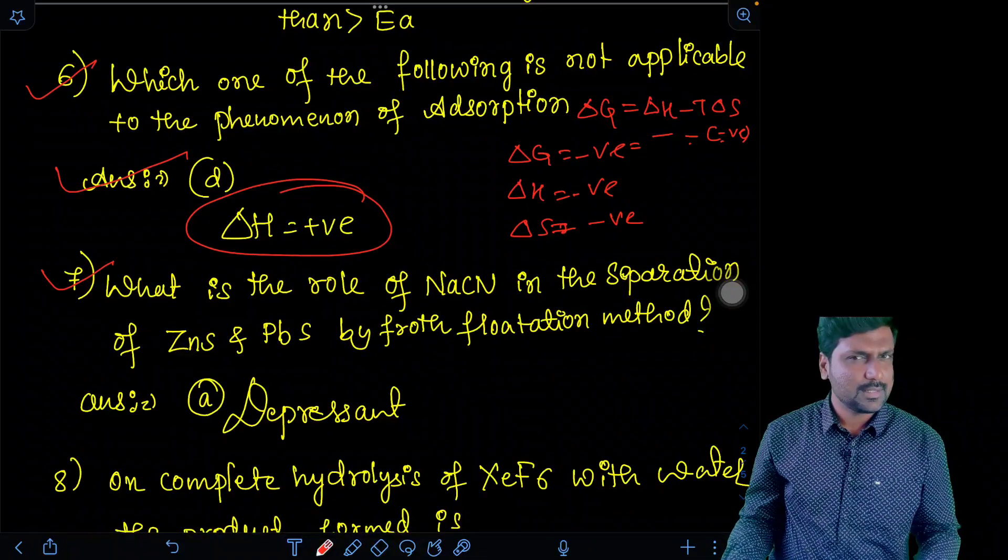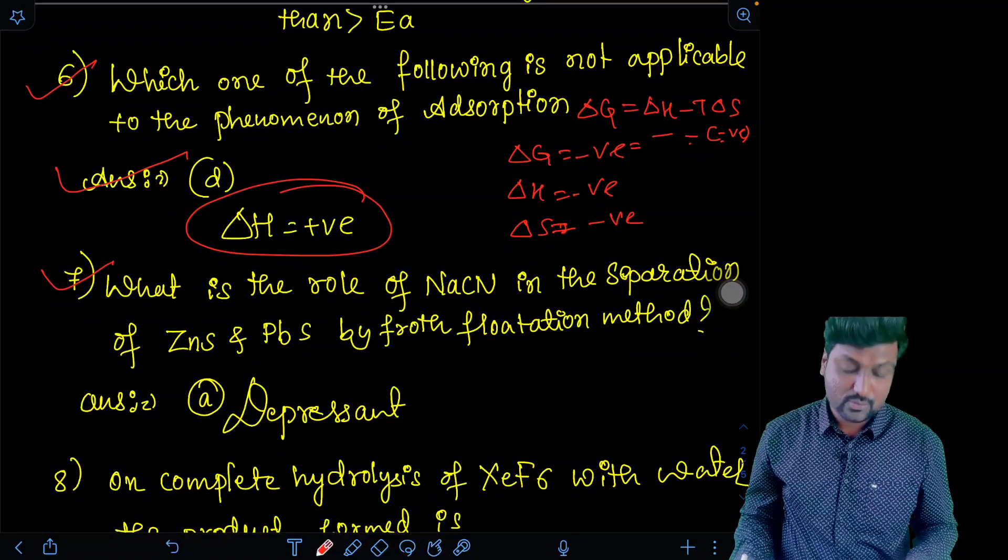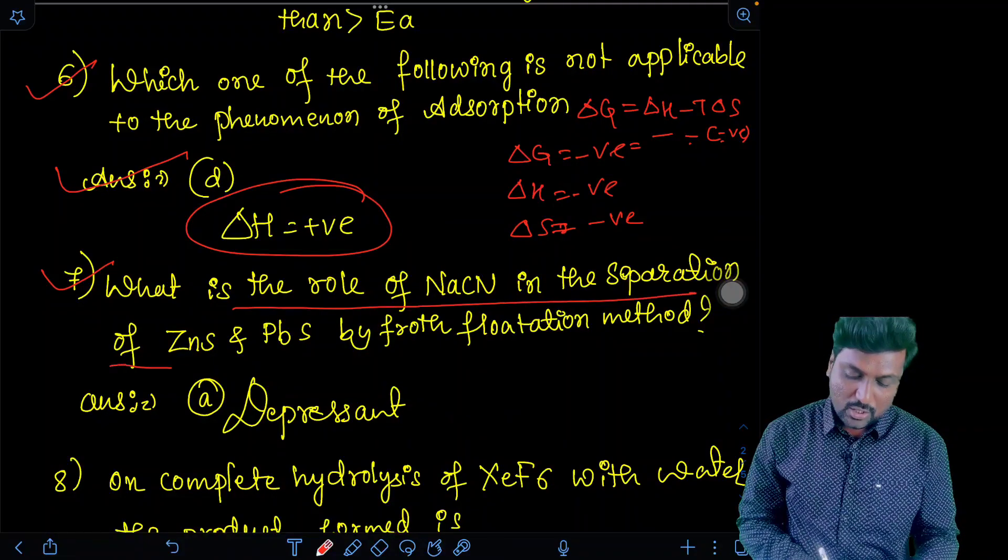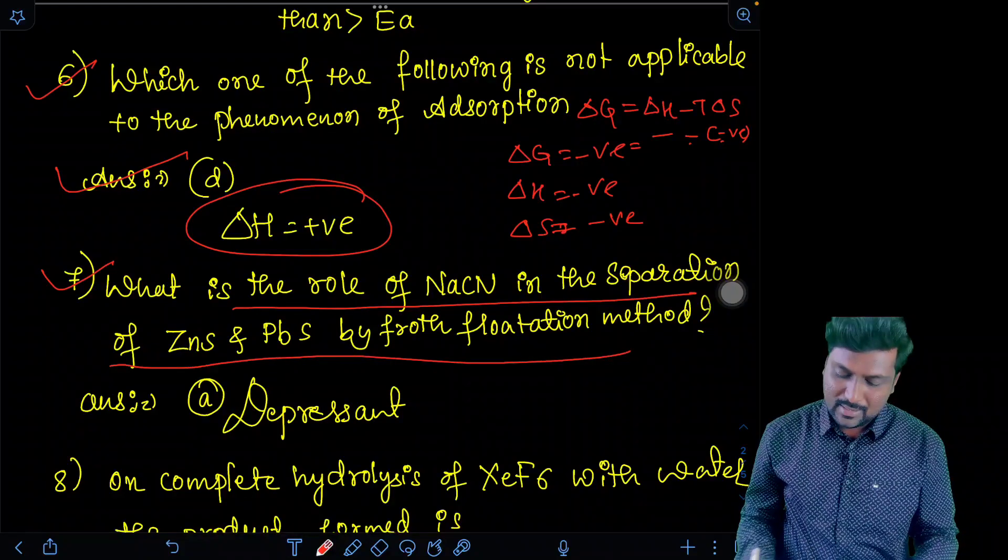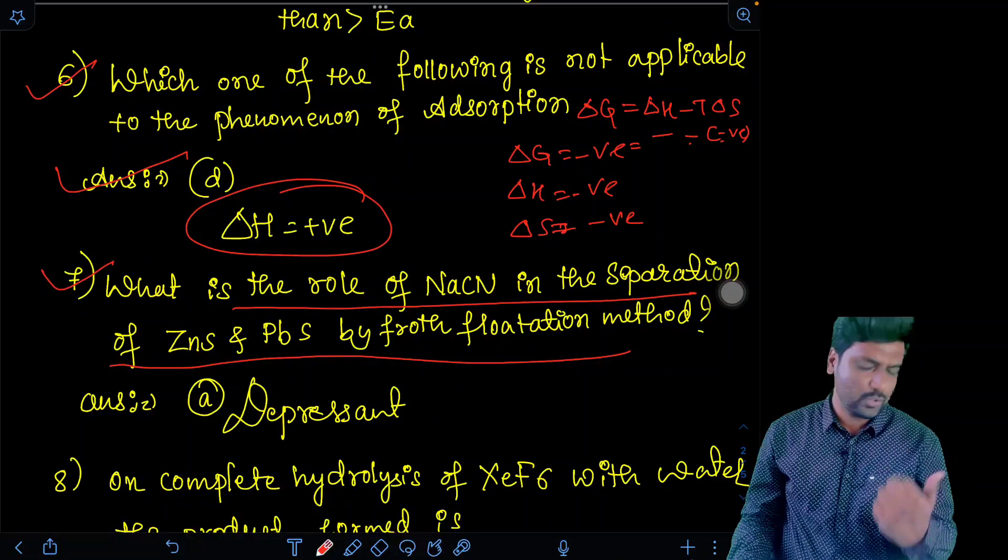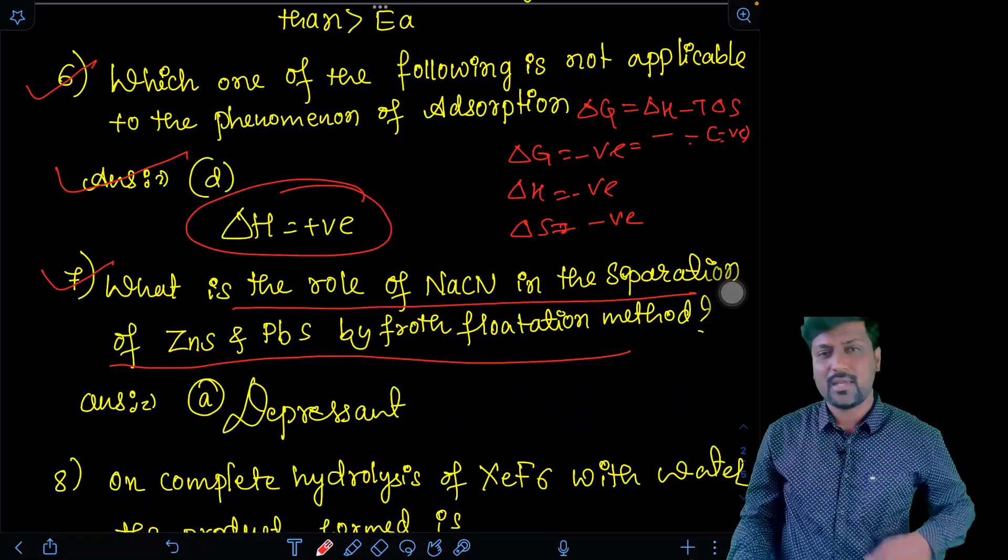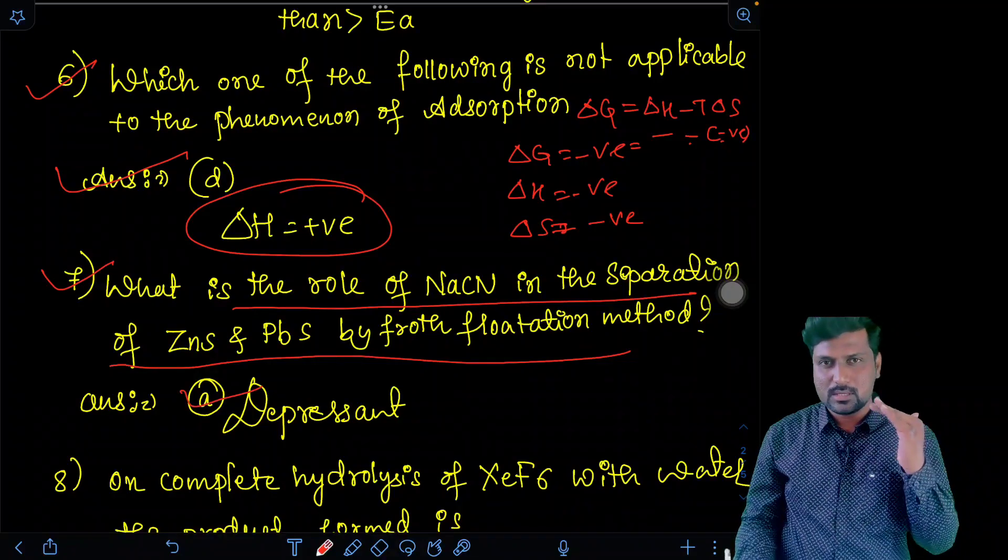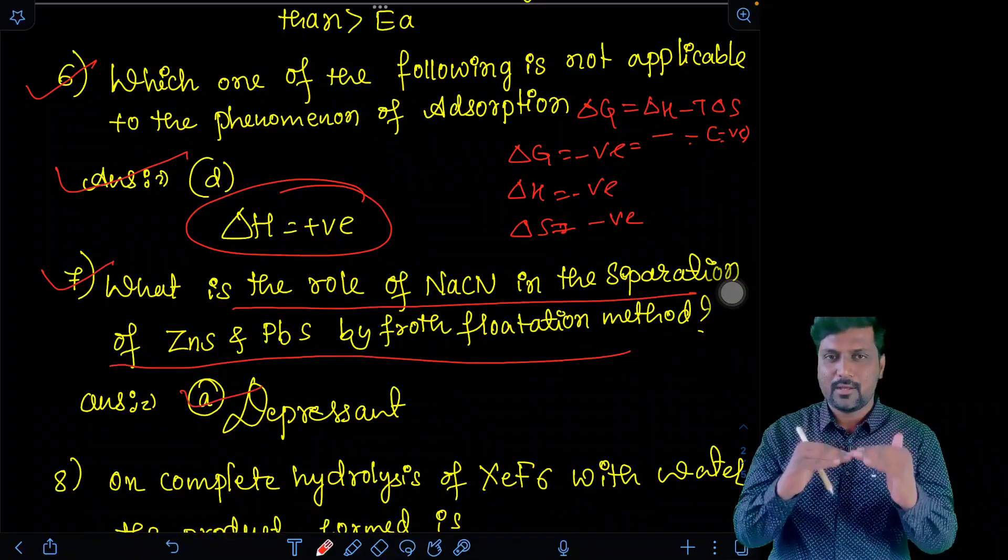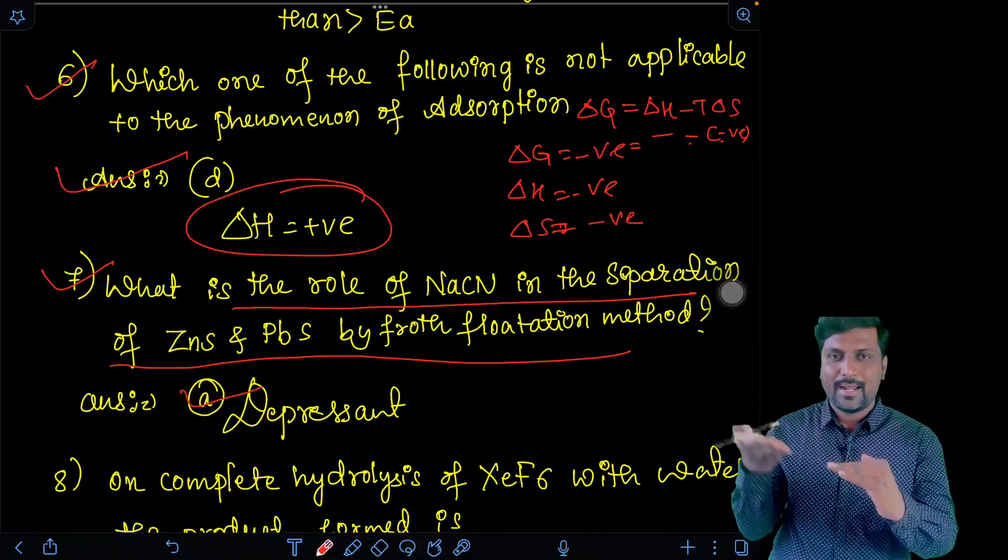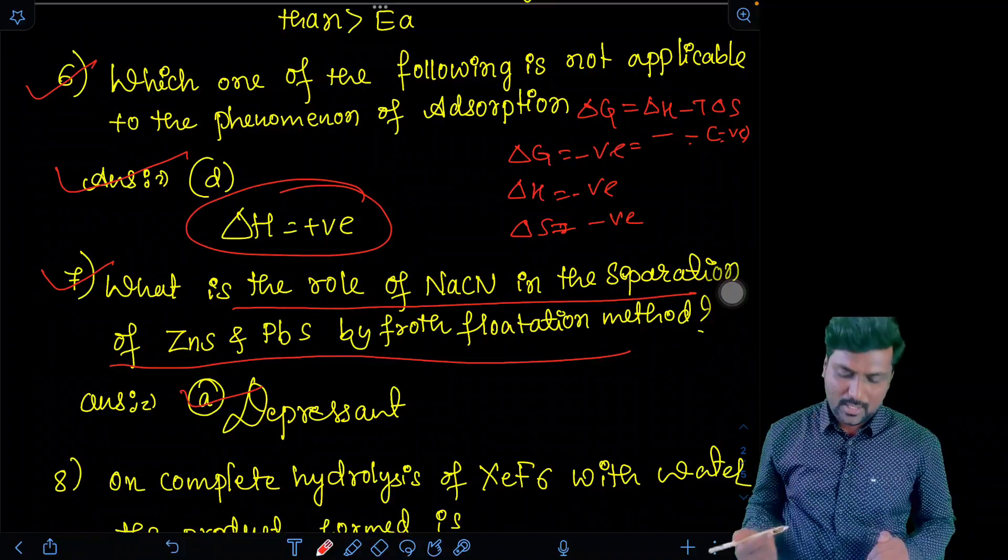Question number seven, that is metallurgy - general principles, processes for the isolation of elements. The question is: what is the role of NaCN in the separation of ZnS, zinc sulfide and lead sulfide for the froth flotation? It is a direct question. That is, sodium cyanide behaves as a depressant, which depresses the zinc sulfide. Zinc sulfide with sodium cyanide, and lead sulfide will come easily with the froth.